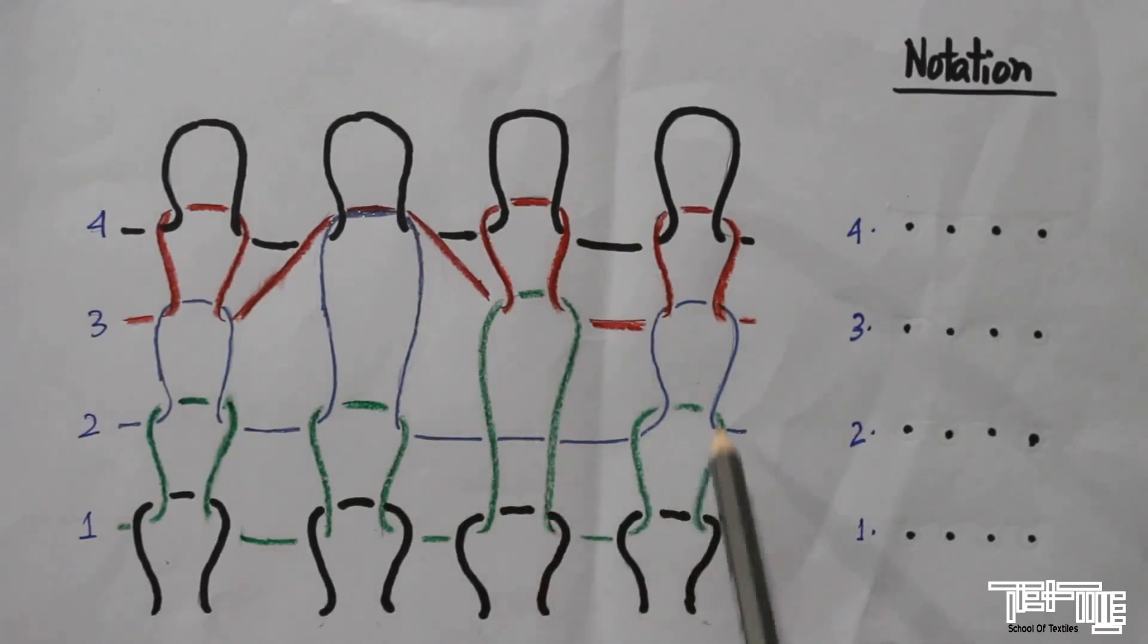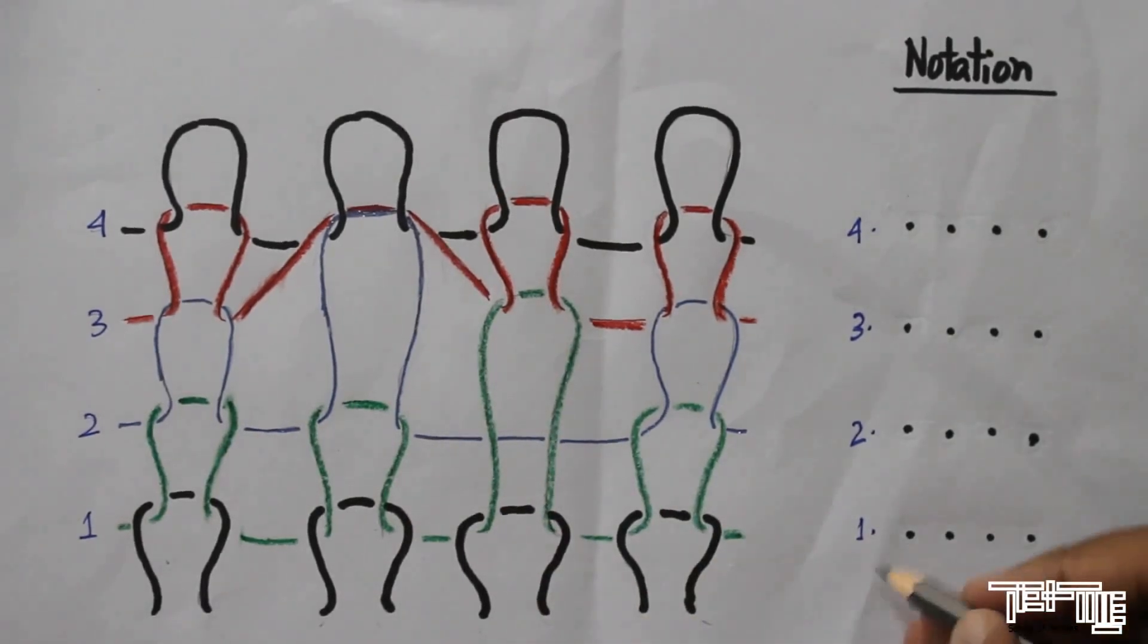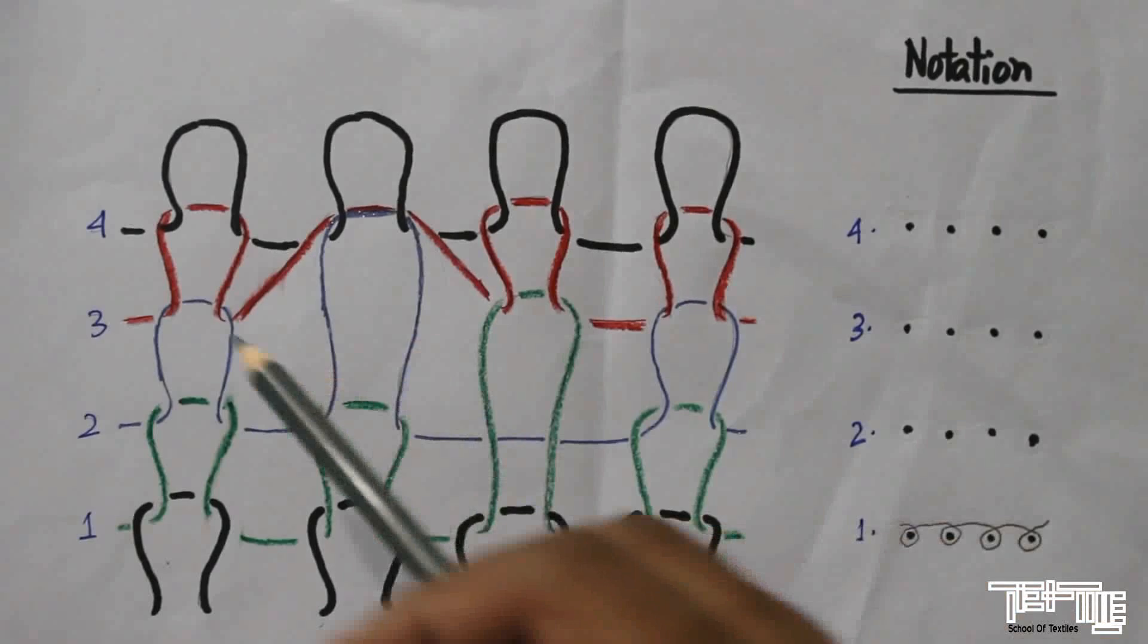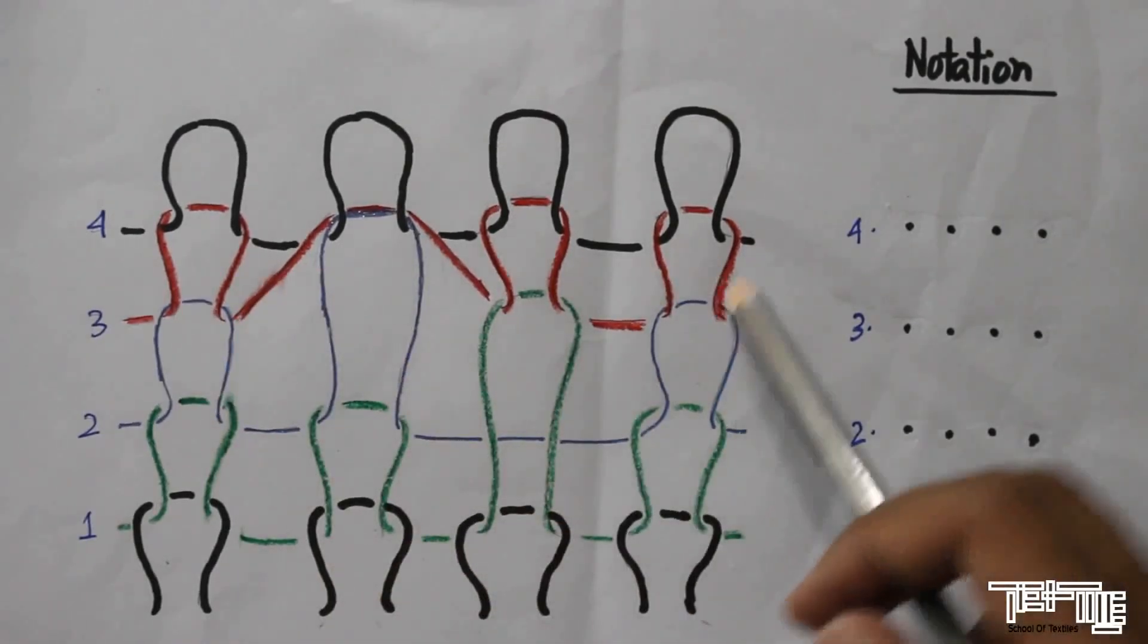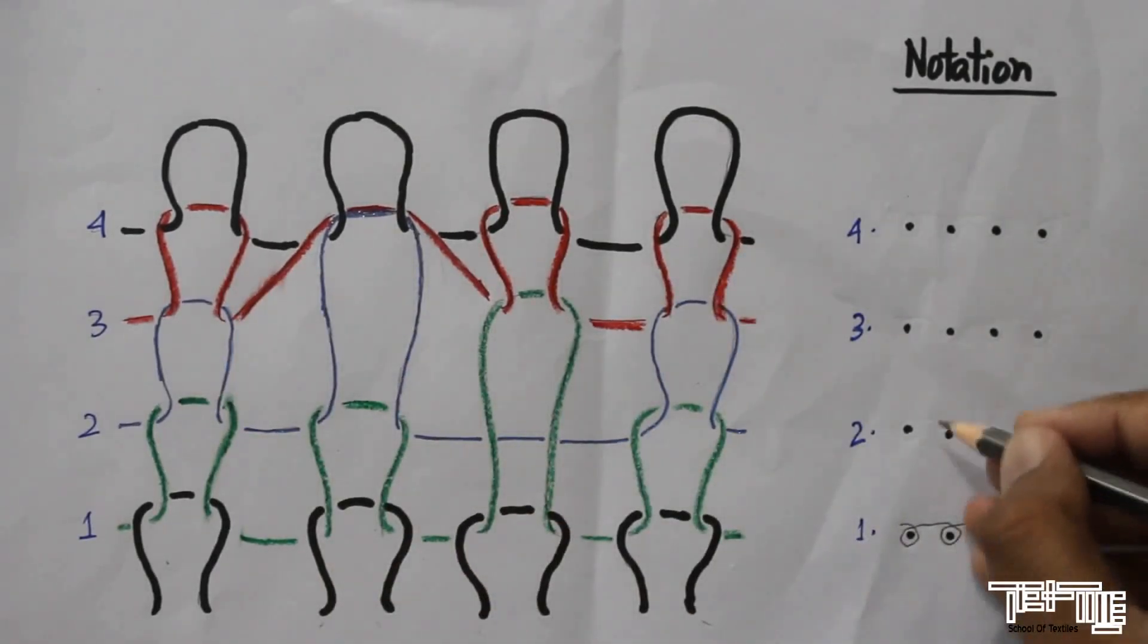Let's start from the first course. Here at first it is knit, knit, knit, and knit, because in the first course all are knit loops.